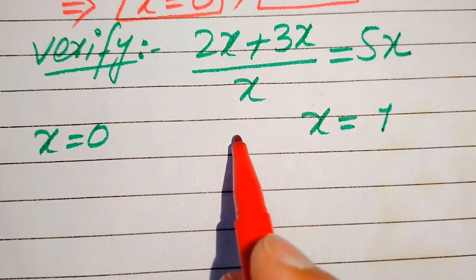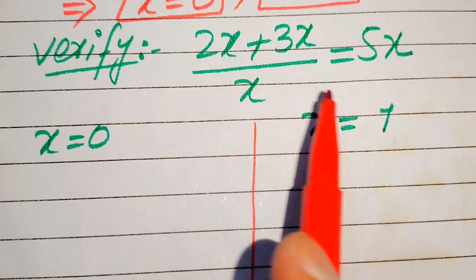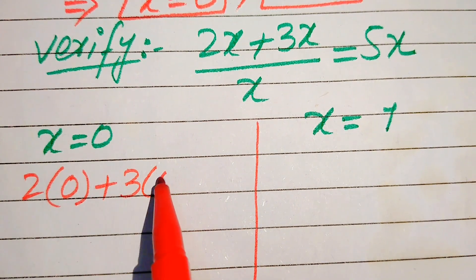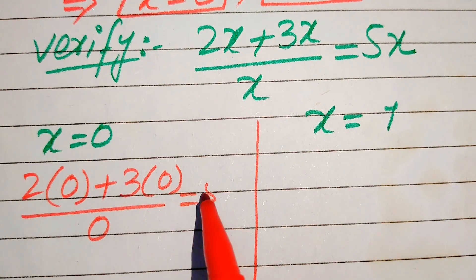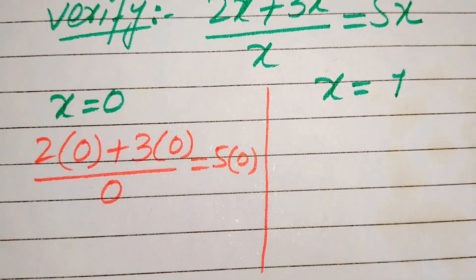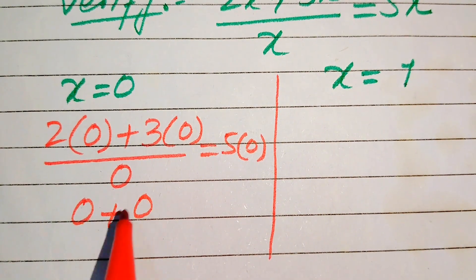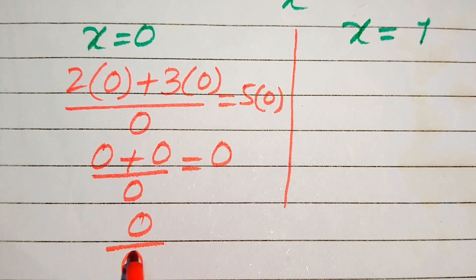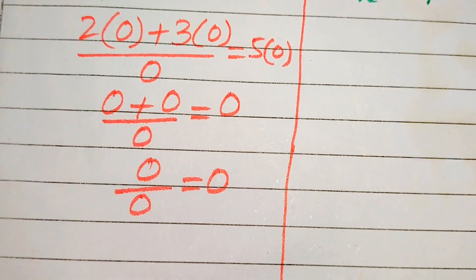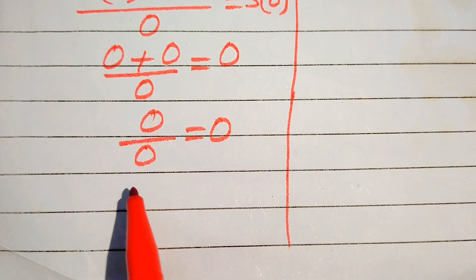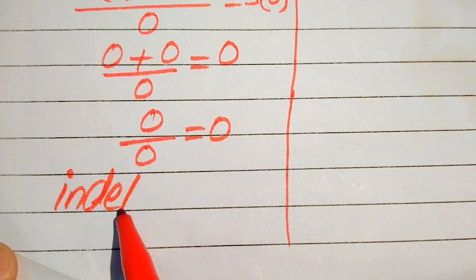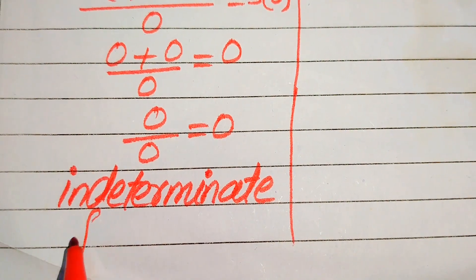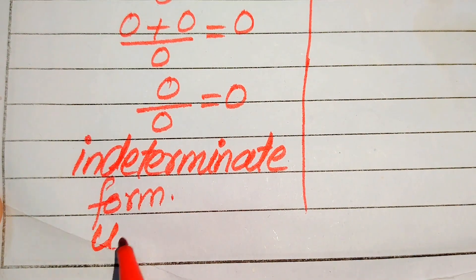For verification, first we substitute x equals 0 on both sides and check the behavior of this equation. It will be written as 2 times 0 plus 3 times 0 divided by 0, equals 5 times 0. This gives 0 plus 0 divided by 0, equals 0, which is 0 over 0 equals 0. Now, 0 over 0 is called the indeterminate form, and in other words we say this is undefined.